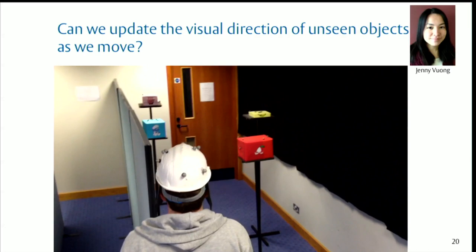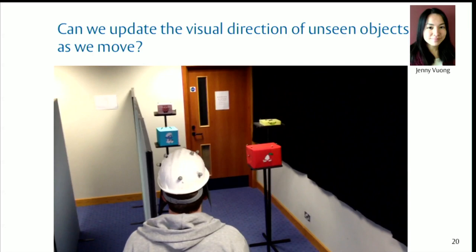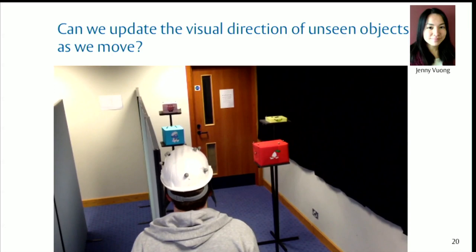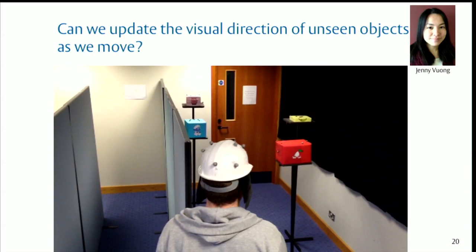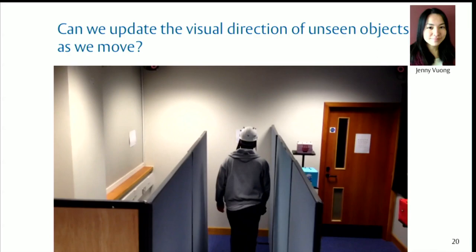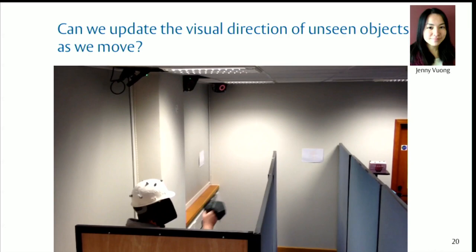Here's someone doing the experiment — we did it both in virtual reality and in the real world to check that nothing was special about virtual reality. You can see Peter here looking at the targets which he's later going to have to point to. He moves his head around, gets plenty of 3D information about their structure, then he walks down past the screens, doesn't see them again, and does various pointing tasks. He walks down, and in the real world version he's tracked, his pointer is tracked, and he gets told what to point at.